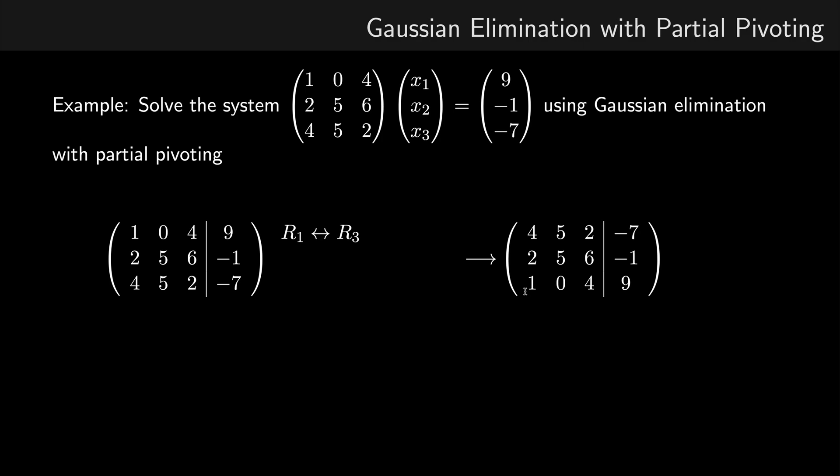Okay, so that's a fairly simple thing to do. So now our pivot is the largest out of the values beneath it. So now we proceed as before. So in order to reduce 2, we're going to have to subtract a half multiplied by row 1 from row 2. And in order to reduce 1 to 0, we're going to have to subtract row 1 multiplied by a quarter.